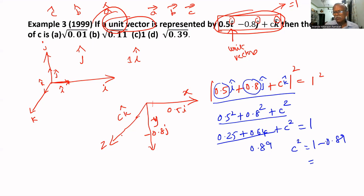Therefore C square equal to 1 minus 0.89, that is equal to 0.11. Therefore C equal to plus or minus square root of 0.11. Therefore B is the answer.